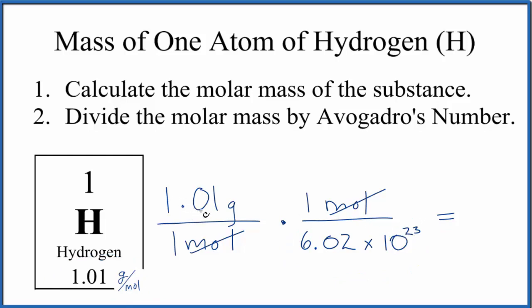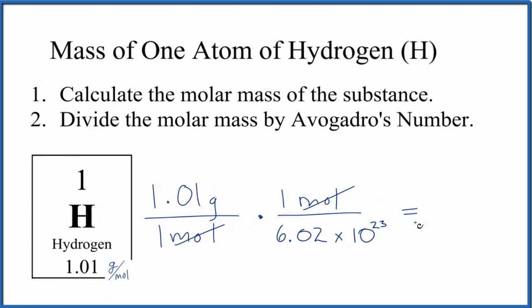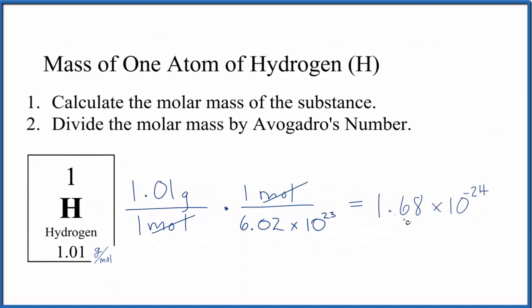So when we work this out, 1.01 divided by Avogadro's number, we get 1.68 times 10 to the negative 24th. The units are going to be grams.